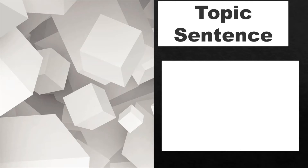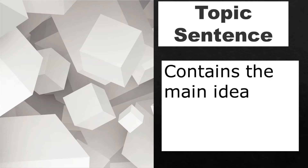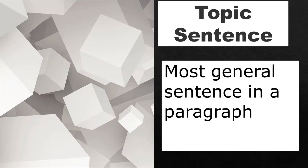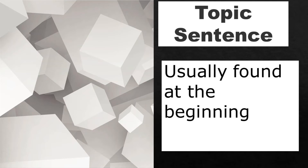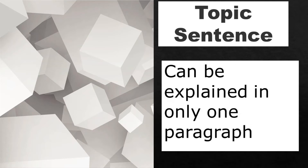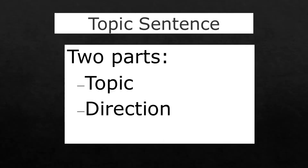The topic sentence contains the main idea and is the most general sentence in a paragraph. All other sentences in the paragraph are just support sentences to the topic sentence. It is usually found at the beginning of a paragraph. The topic sentence can, and should be, explained in only one paragraph. The topic sentence has two parts.